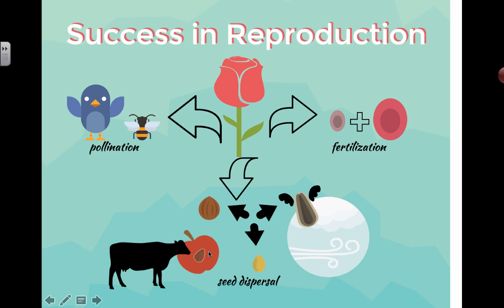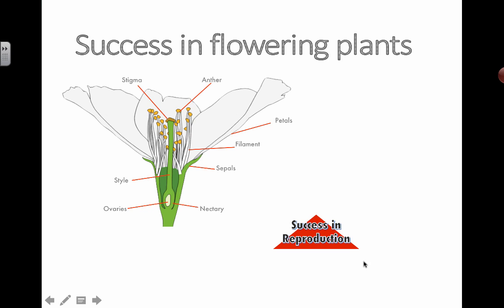If you're a plant, you don't want your seeds to land right next to you, because chances are you're already sucking up a lot of the nutrients out of the ground around you. So you want to send your baby seeds as far away as possible to maximize their chance of being able to start a life on their own.